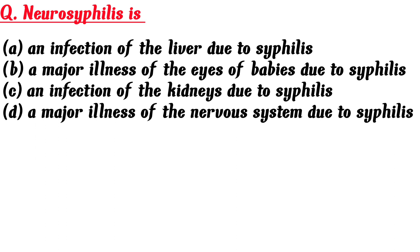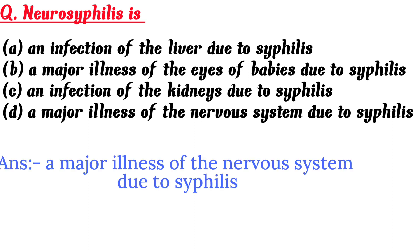Neurosyphilis is: A. An infection of the liver due to syphilis, B. A major illness of the eyes of babies due to syphilis, C. An infection of the kidneys due to syphilis, D. A major illness of the nervous system due to syphilis. Answer is D. A major illness of the nervous system due to syphilis.